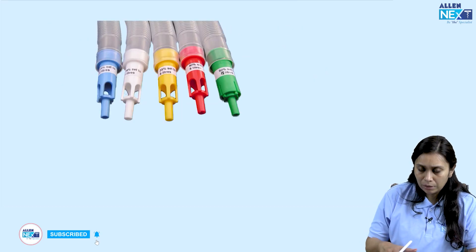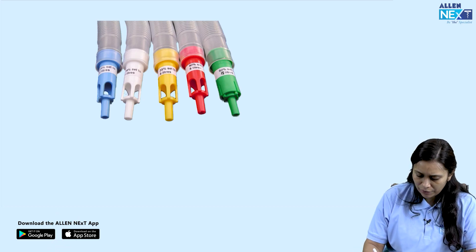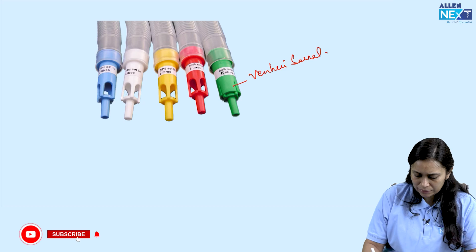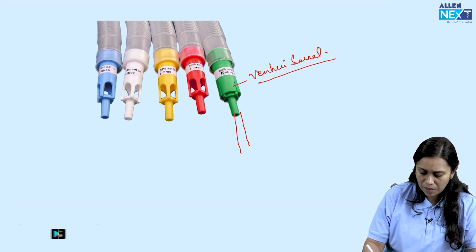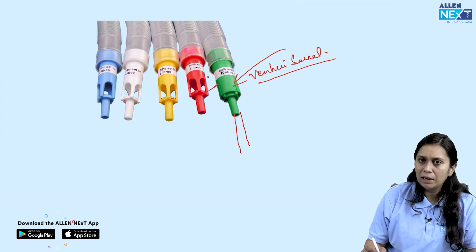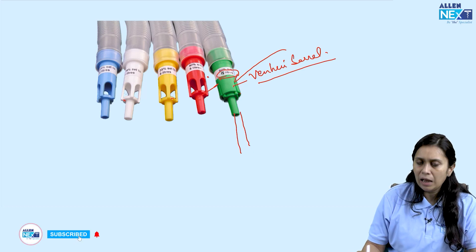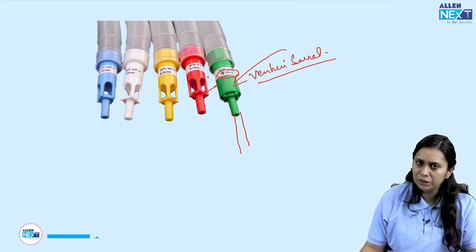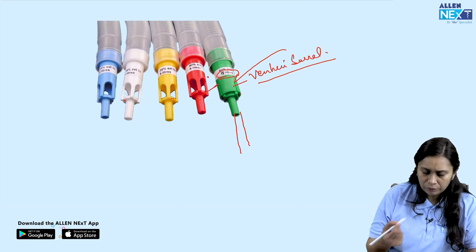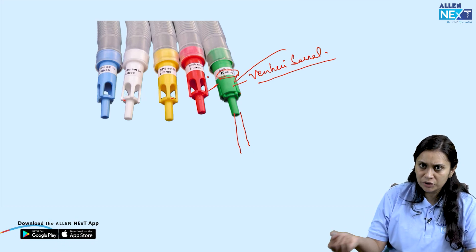Now let's look at images of the Venturi mask. This is the Venturi barrel, which is color coded. High-flow oxygen is given through it, passes through the barrel, and room air is entrained. Each color indicates how many liters of oxygen to set and what FiO2 it will deliver. For the blue one, we set 2 liters and it delivers 24% FiO2.